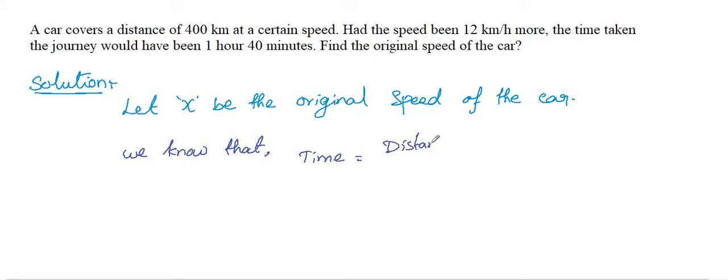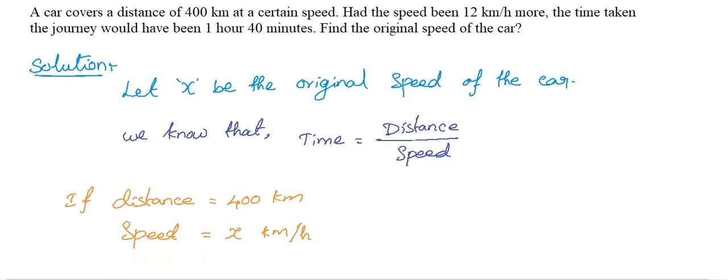We need to find the original speed of the car. So let X be the original speed of the car. We know that time equals distance divided by speed. Given the distance is 400 kilometers and the speed we just assumed as X kilometers per hour.